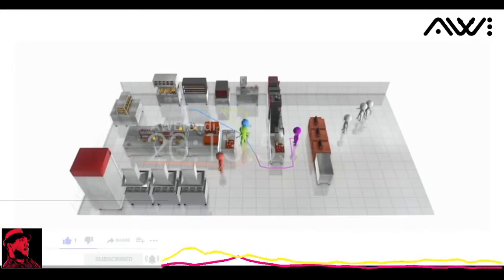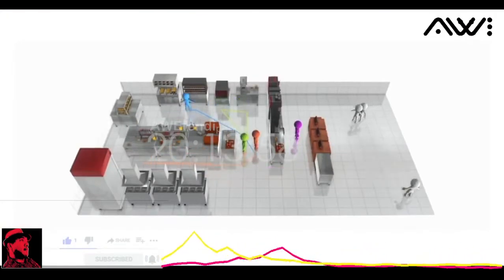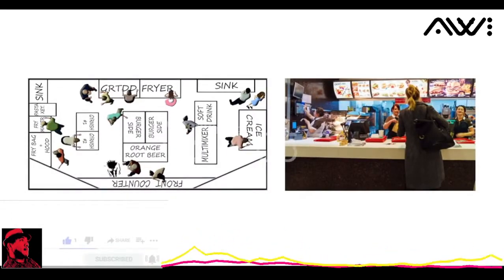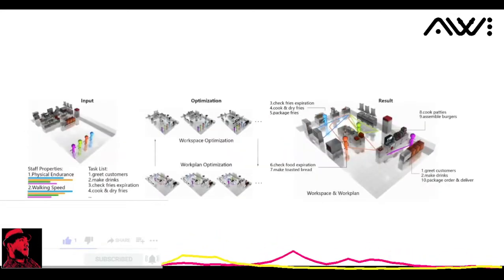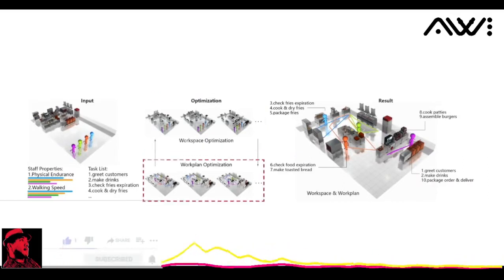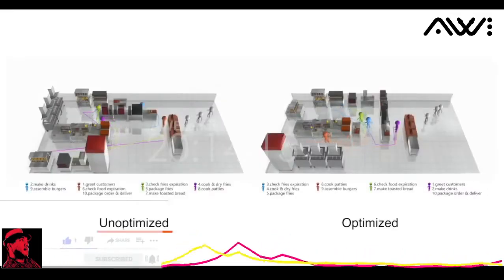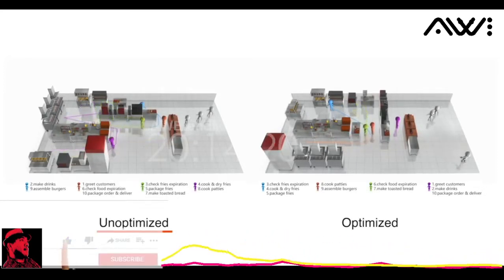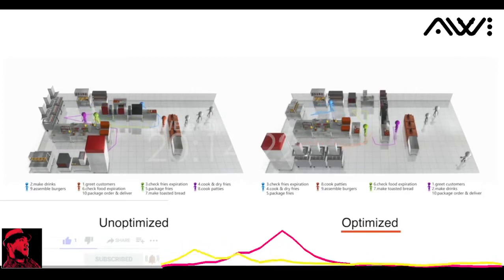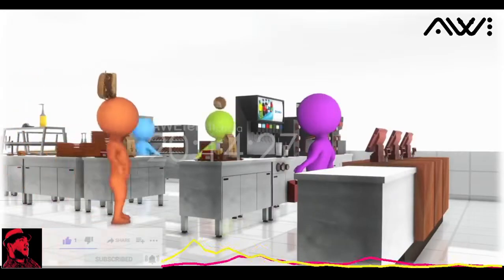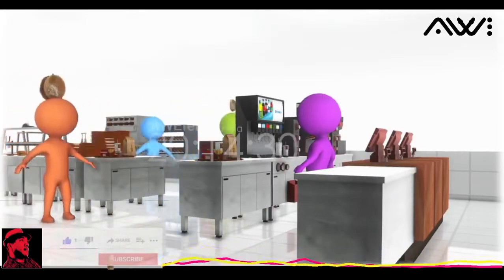A workspace and a work plan are essential for facilitating human collaboration to achieve production goals. For example, fast food restaurants' efficient production benefits from a streamlined workspace and an efficient work arrangement. Our approach consists of two major components: workspace optimization and work plan optimization. Our approach takes an empty workspace, equipment objects, staff properties, and a list of tasks as input. Then it optimizes the workspace and work plan alternatively until obtaining a satisfactory result. For more details about our joint optimization, please come to our talk.